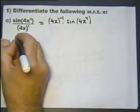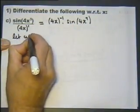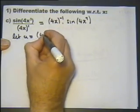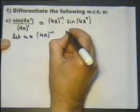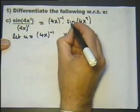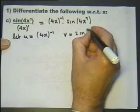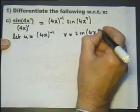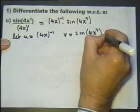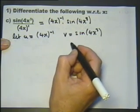Now we can consider letting U equal the first part, and V equal the second part. And instead of using the quotient rule, as we did with our first effort, we can now use the product rule.